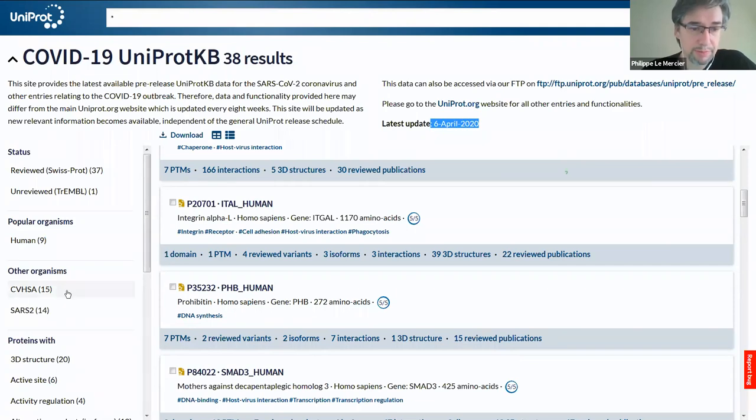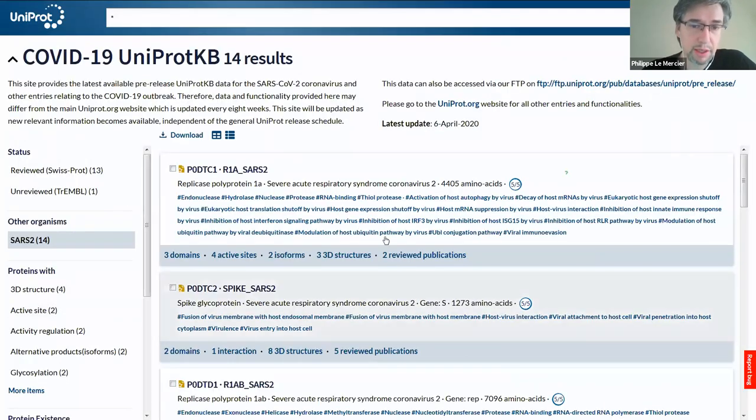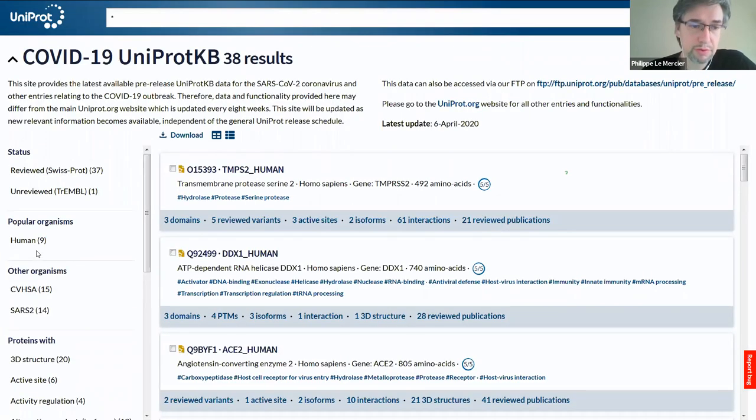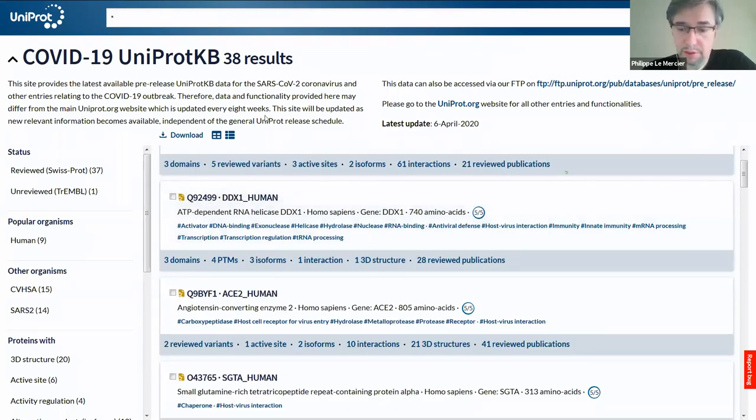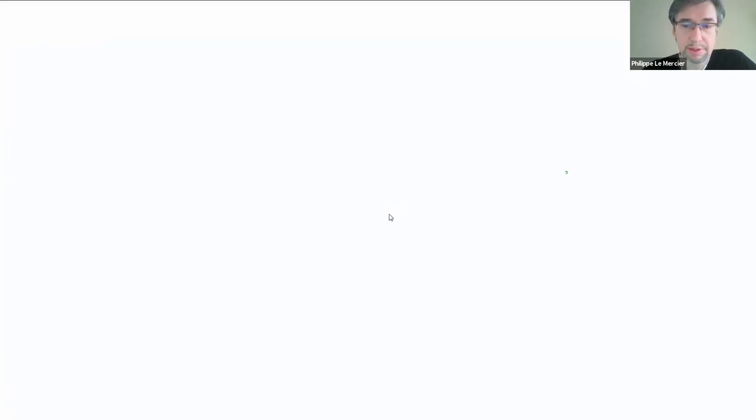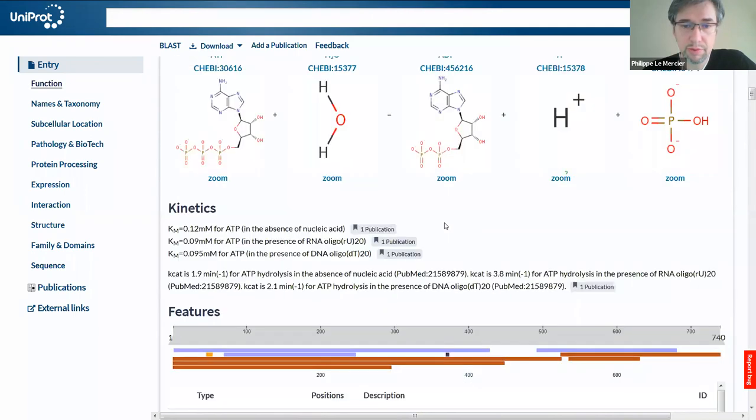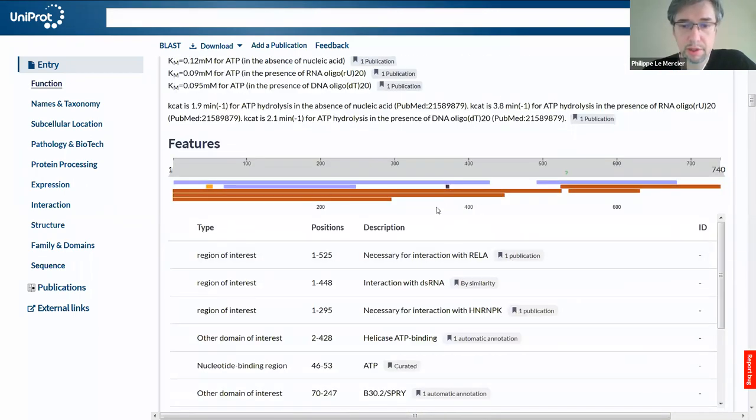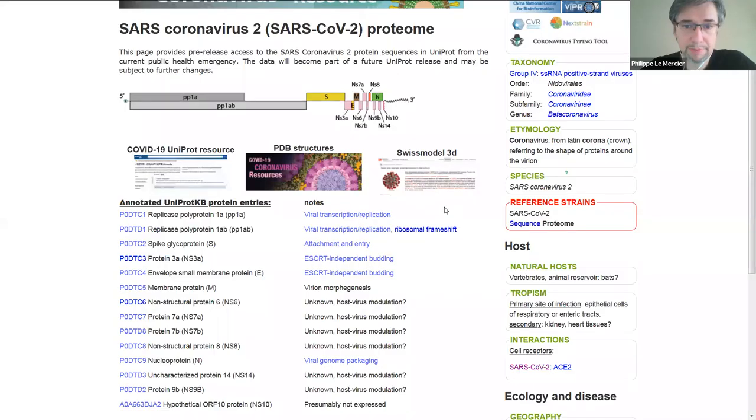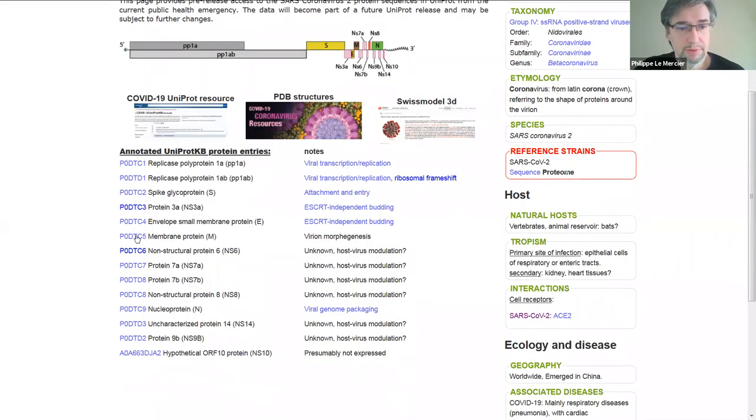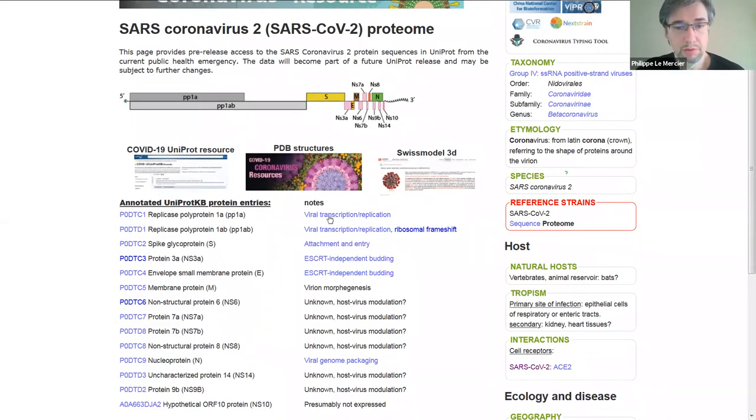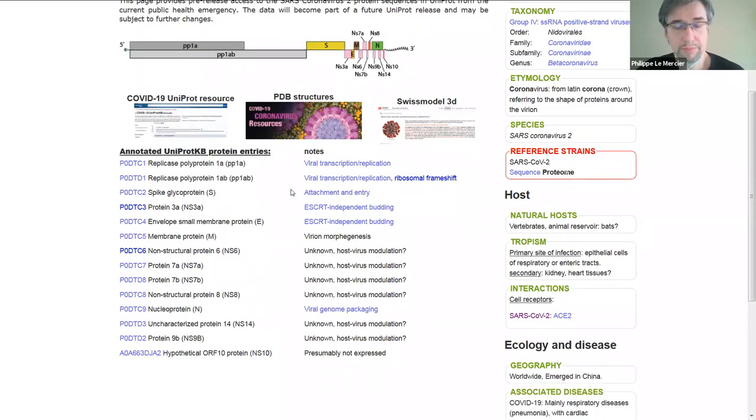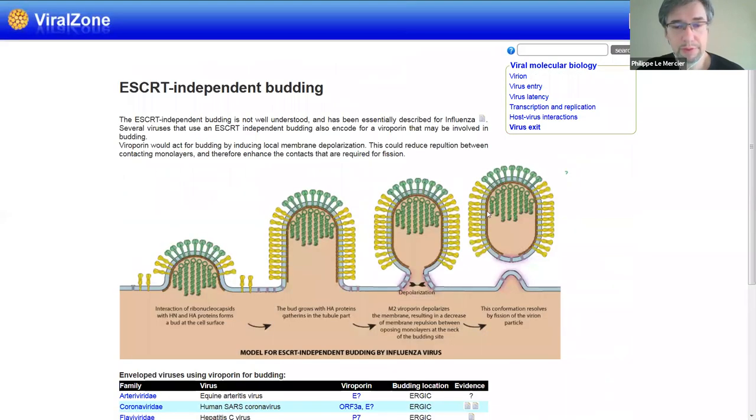UniProt has reacted by giving pre-release entries. You see, last update is 6 April. It can be updated very quickly and independently from the classical release of the whole database. It gives access to this annotation to everyone. You have in this pre-release SARS-1 and SARS-2. If you click on that, you will have the proteins of SARS-2 and SARS-1. You have also nine human proteins which are updated for their interactions with SARS.